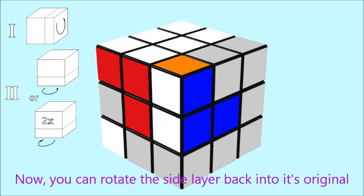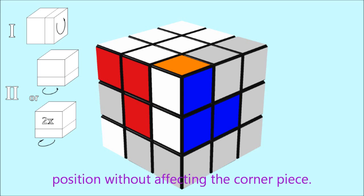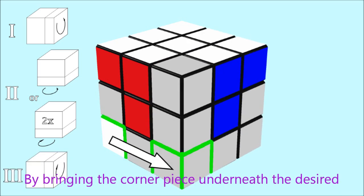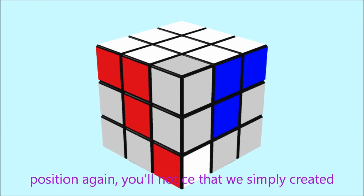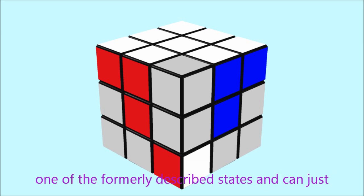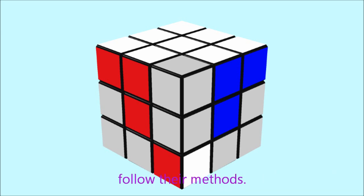Now you can rotate the side layer back into its original position without affecting the corner piece. By bringing the piece underneath the desired position again, you will notice that we simply created one of the formerly described states and can just follow their method.